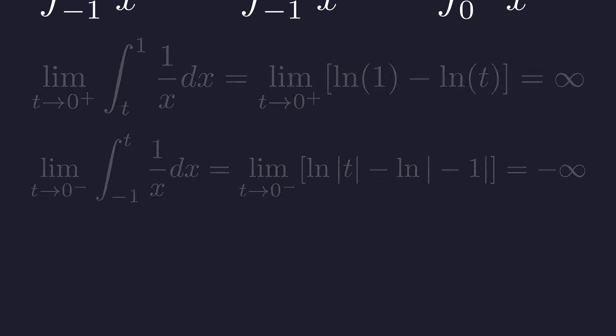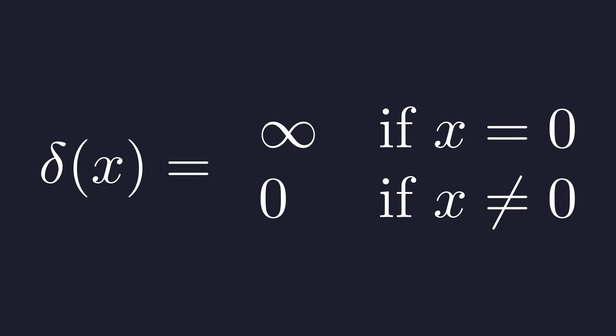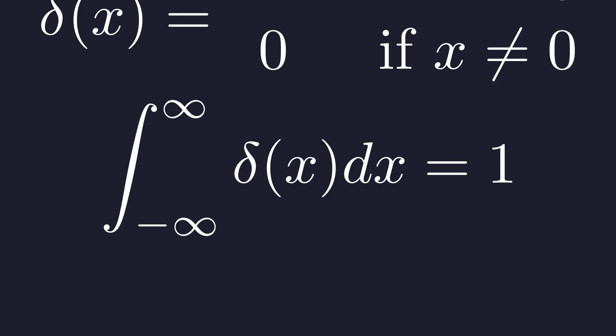Sometimes physics demands mathematical objects that seem impossible. The Dirac delta is one such object. Imagine a function that is zero everywhere except at x equals zero, where it is infinite, and yet the total area under this infinitely tall, infinitesimally thin spike is exactly one. This isn't a true function—it's a distribution.